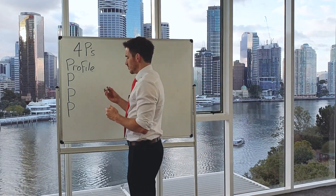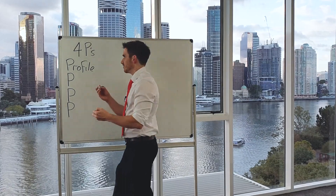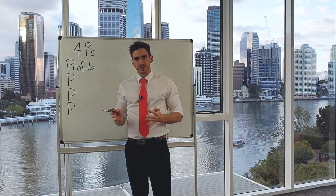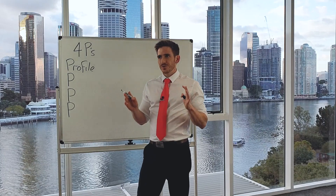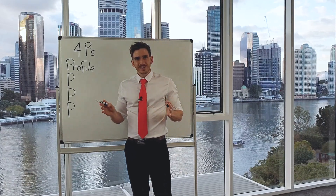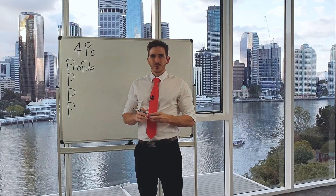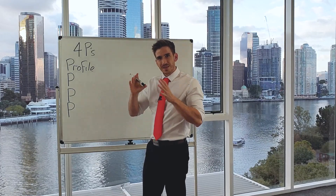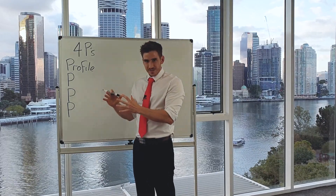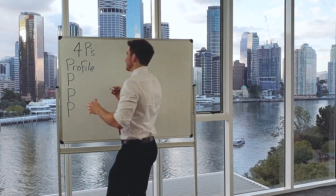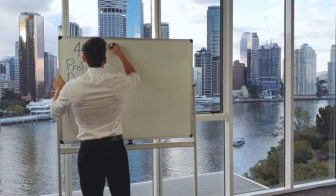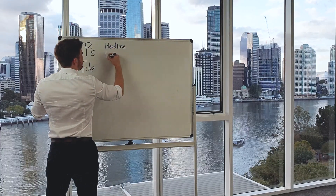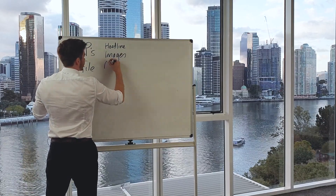If I'm going to break it down into something more actionable, I'll put it into three core components. There's a lot you can do with your personal profile, but if you try to do everything before you start generating leads, you'll waste too much time when you could be getting cash flow into your business. So the three core things you need to optimize are your headline, your images, and your about section.